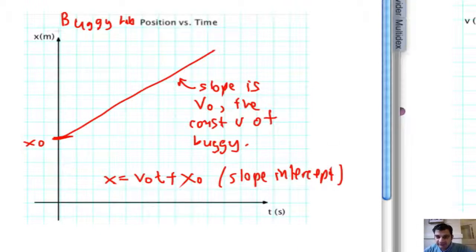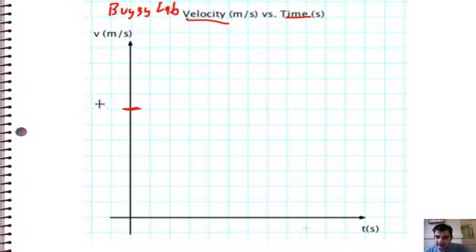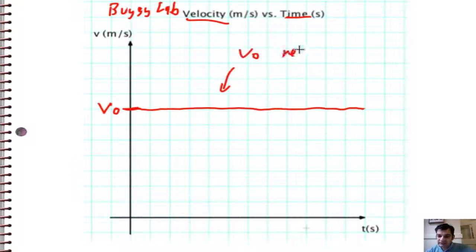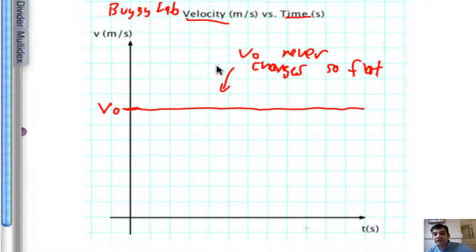Now I'm going to do a graph of the velocity of the buggy versus time, which is a little bit different. When we plot velocity versus time, remember velocity is the slope of the position graph. We said that's a constant velocity, v₀. So what that means is, forever and ever, this is a nice flat line — v₀ never changes. This goes back to the idea from the previous unit that the buggy never speeds up or slows down.